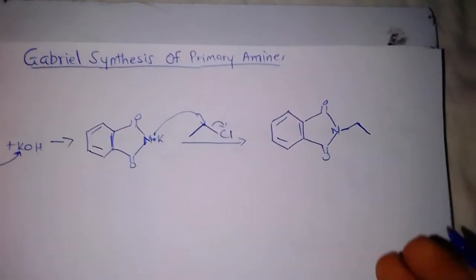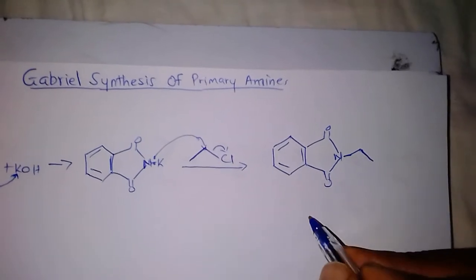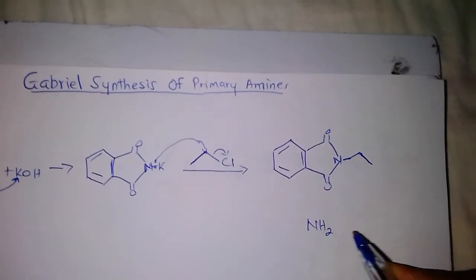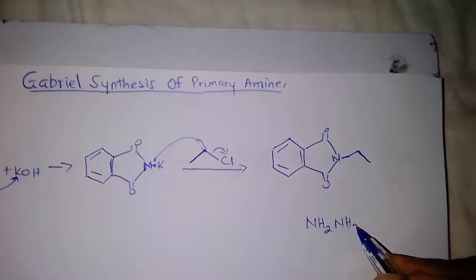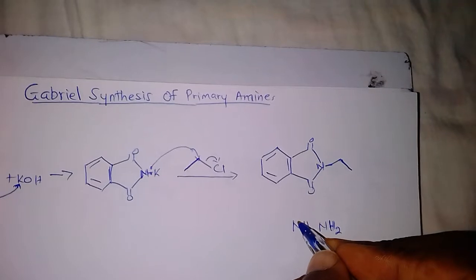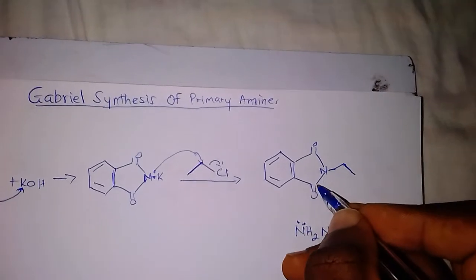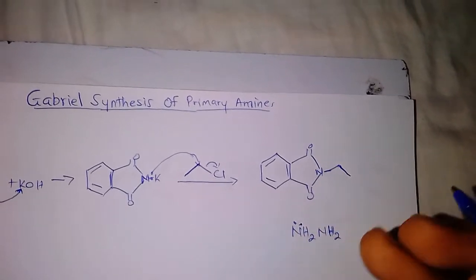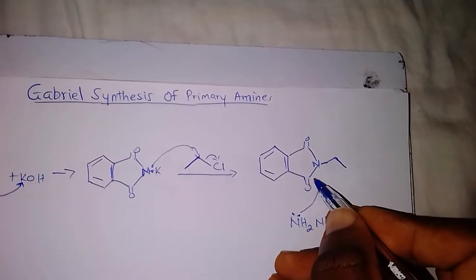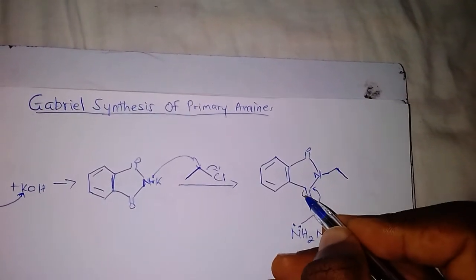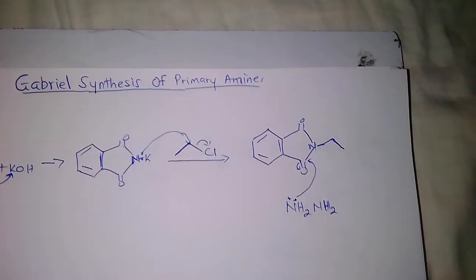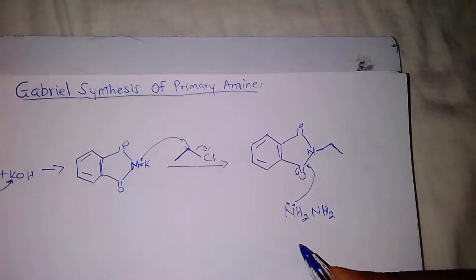You will react the N-alkyl phthalamide with hydrazine. There is going to be a reaction between this nitrogen and the lone pair of hydrazine, attacking the carbonyl carbon of the phthalamide, leading to a ring opening.